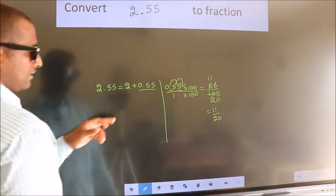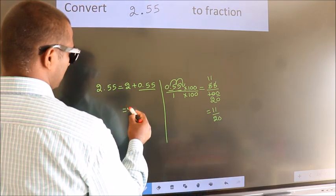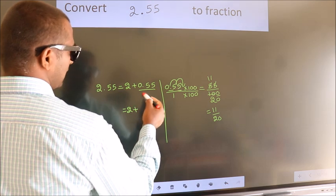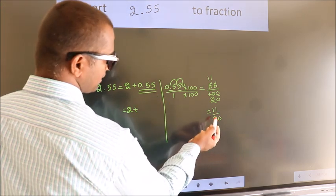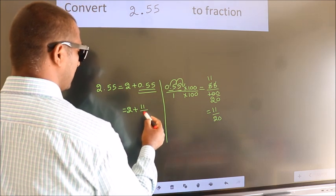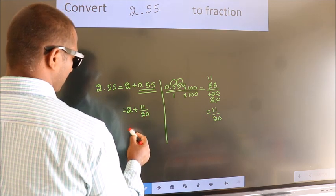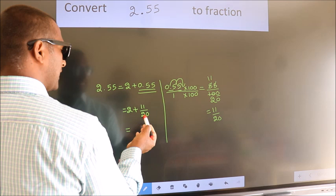Now here, 2 plus in place of 0.55, now we write this fraction 11 by 20. 2 plus 11 by 20.